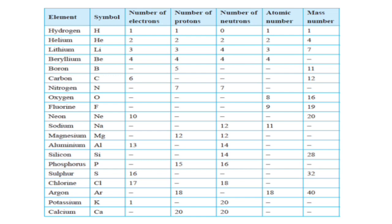Here we have a table of the first 20 elements of the periodic table showing their symbol, number of electrons, number of protons, number of neutrons, atomic number, and mass number. For hydrogen (H): electrons 1, protons 1, neutrons 0, atomic number 1, mass number 1. Remember that the number of protons, number of electrons, and the atomic number are all equal. For helium: electrons 2, protons 2, neutrons 2, atomic number 2, mass number 4. For lithium: electrons 3, protons 3, atomic number 3, mass number 7.